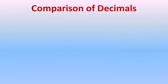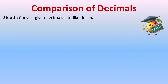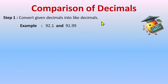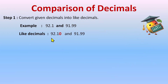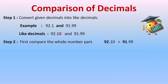Now let's learn the steps for comparison of decimals. Step one: convert the given decimals into like decimals. For example, here we have decimal places of one and two, so I insert one zero to make this a two decimal place number. I've now made 92.10 and 91.99 — they are like decimals.